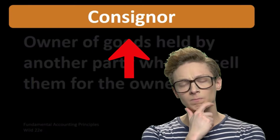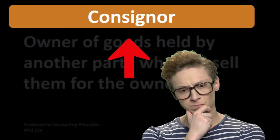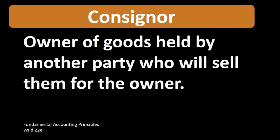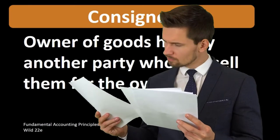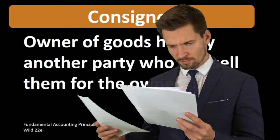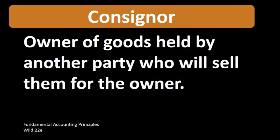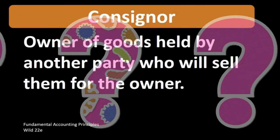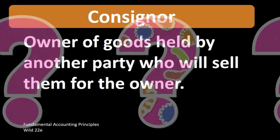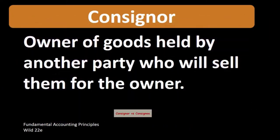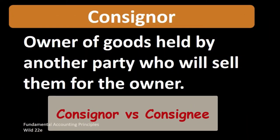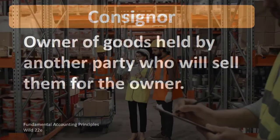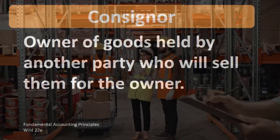When we think about the term consignor related to a consignment arrangement, a couple things are confusing: the idea of inventory — who owns the inventory and who is holding on to the inventory — and the idea of the consignor versus the consignee. Are we talking about the person giving the inventory or receiving the inventory?